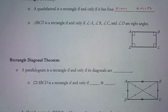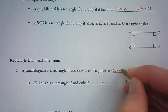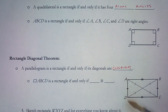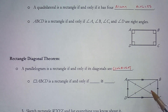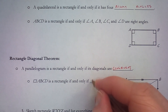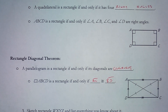The Rectangle Diagonal Theorem states that a parallelogram is a rectangle if and only if its diagonals are congruent. In this picture, we know we're looking at a parallelogram because opposite sides are parallel, and we can see with the tick marks that the diagonals are congruent to each other, which makes it a rectangle. So ABCD is a rectangle if and only if diagonal AC is congruent to diagonal BD.